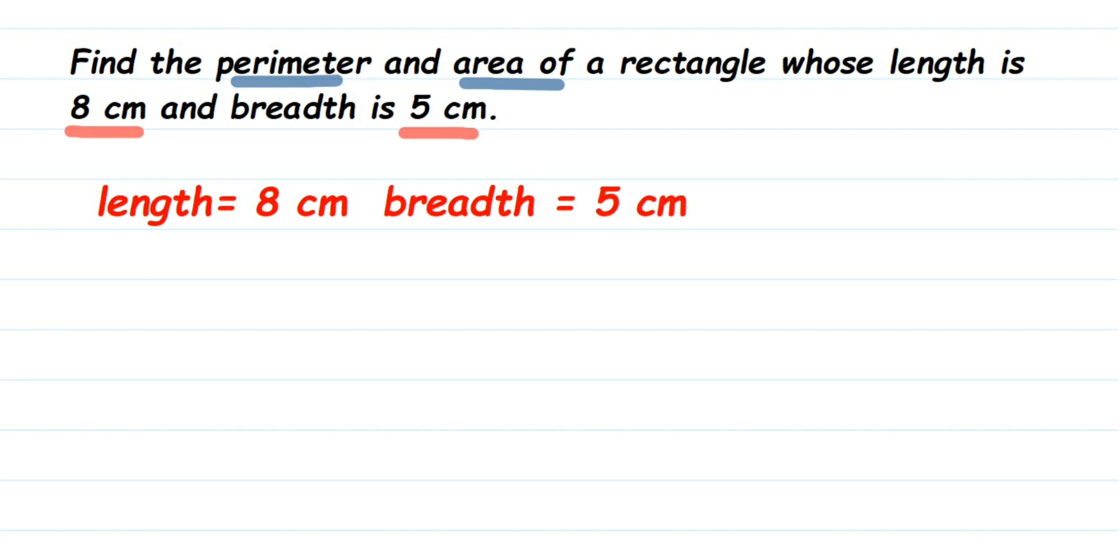Now we have to find the area and perimeter. First, we're going to find the perimeter. What is the perimeter? Perimeter is when you add all the boundaries—that's called perimeter.